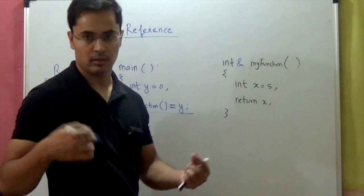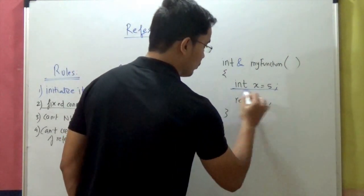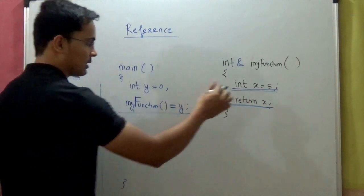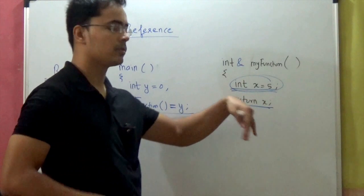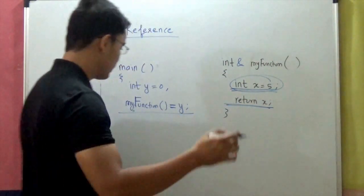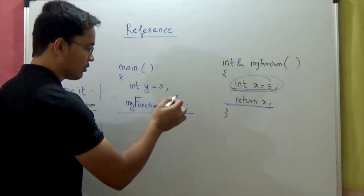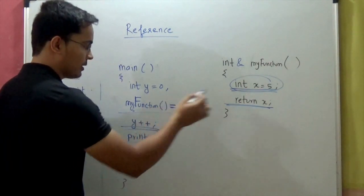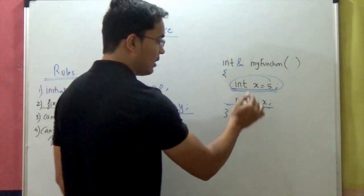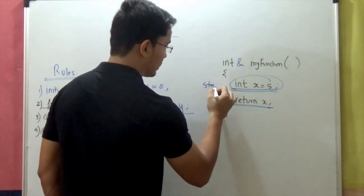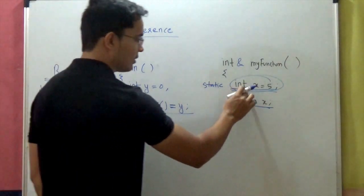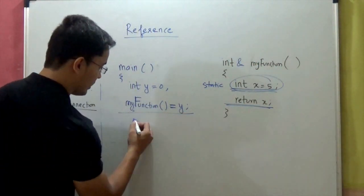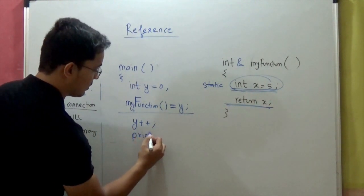There is one more important rule: you should never return a reference to a local variable. The problem is that x will go out of scope as soon as the function call terminates — it's a local variable and it will basically die. So if you try to use y after initializing it with that returned reference, you are trying to access a variable that has gone out of scope. Instead, you can make the variable static — because a static variable outlives the function — and then you can safely use y to increment it, print it, or perform other operations.